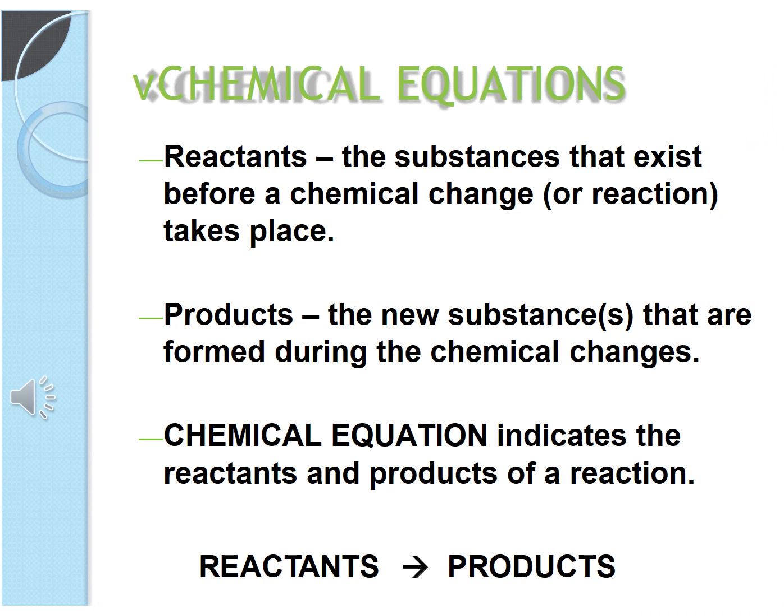Chemical equation contains three things. First is reactants: the substance that exists before a chemical reaction takes place is called as reactants. Second is products: the new substances that are formed during the chemical change is called as products. In between reactants and products arrow is present.